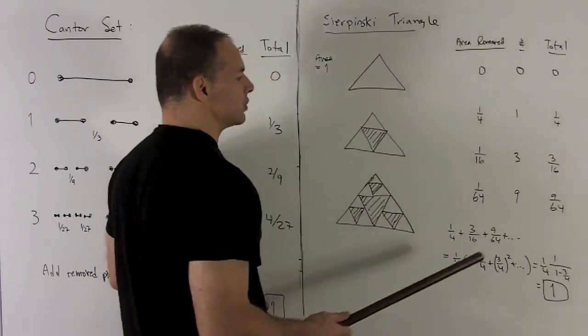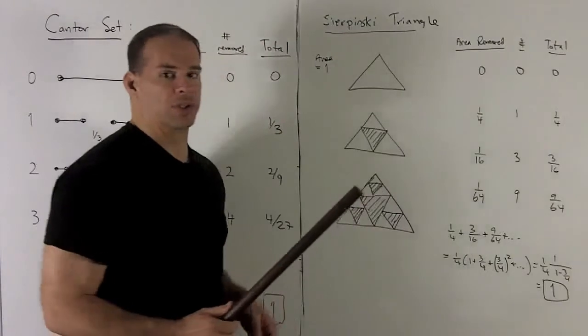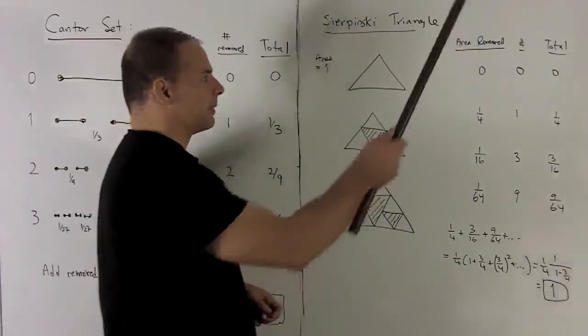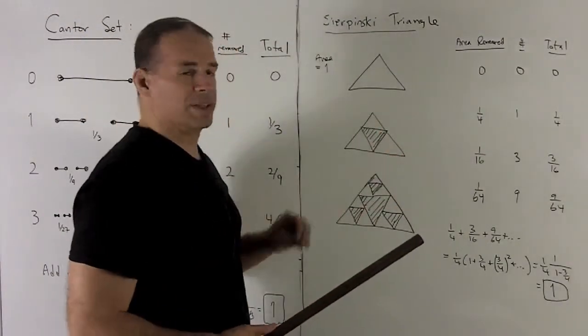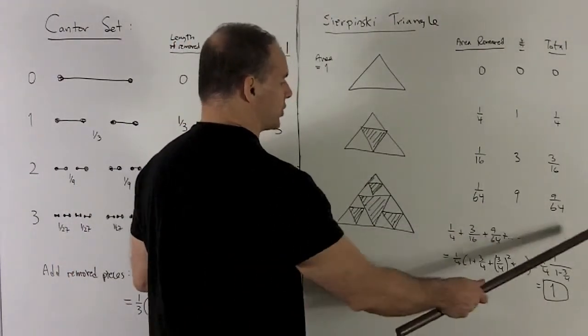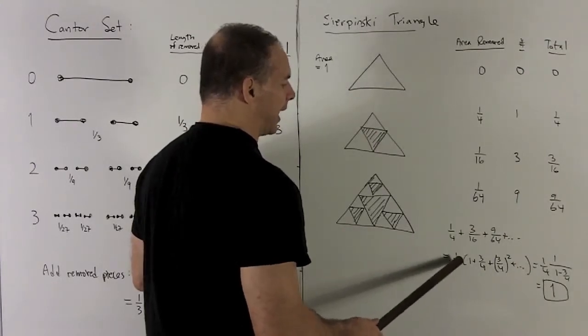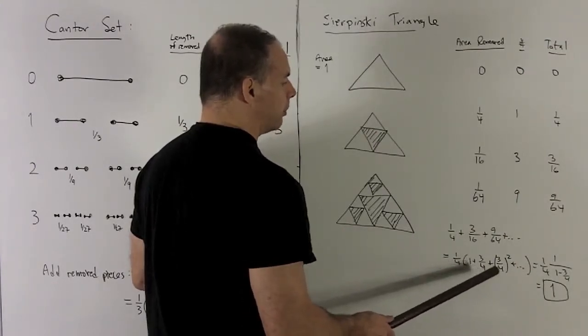I add up that right column after I perform this infinitely often. What do we notice? I'm going to get a geometric series. We'll have one fourth—that's going to be my a—and I can pull that out, which leaves me with one plus r plus r squared and so on. So r is three-fourths.